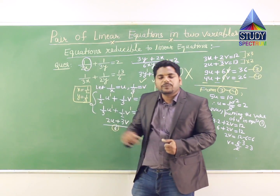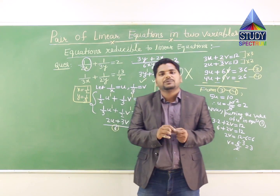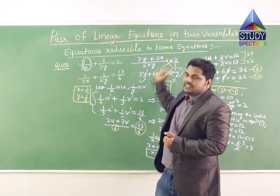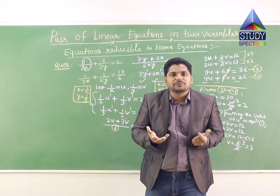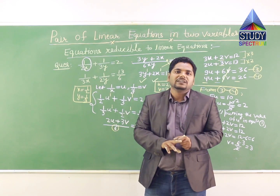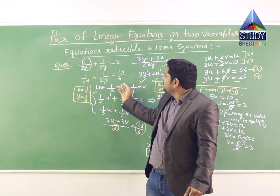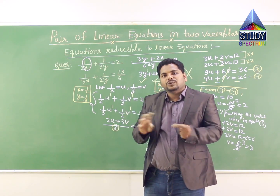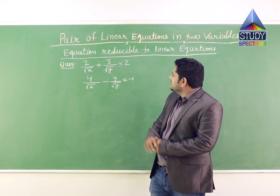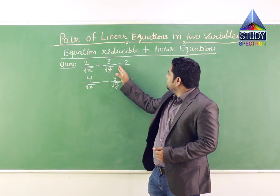In this type of question, the given equations are not linear. To make them linear, we substitute something so that they become linear equations. Our topic was equations reducible to linear equations — equations which are not linear can be reduced to linear equations by substituting at the place of x and y. As we substituted 1/x equal to u and 1/y equal to v, we need to do this type of thing to make the equations linear.